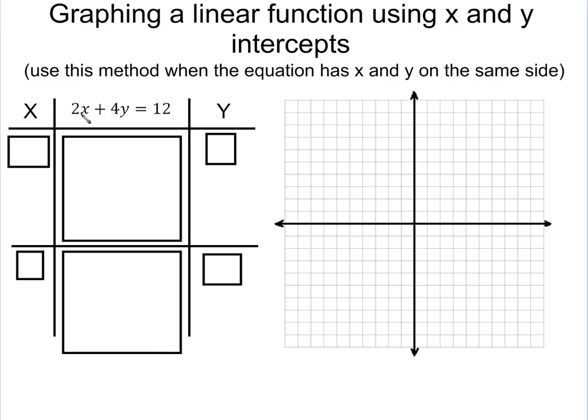So here are my equations, 2x plus 4y equals 12. In this problem, what we're going to do first is we're going to plug in 0 for x. So you can see here, wherever I saw an x, I put a 0, so 2 times 0 plus 4y equals 12.